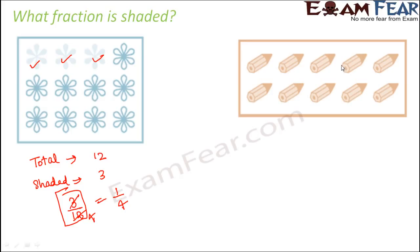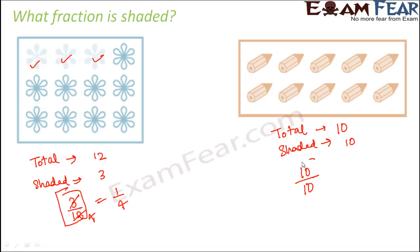Let us look at the next one. Here you see ten objects in total. How many of them are shaded? If you consider them, all of them look shaded. So we have a total of ten, and all ten are shaded — ten by ten are shaded. That means the whole picture is shaded in this case.